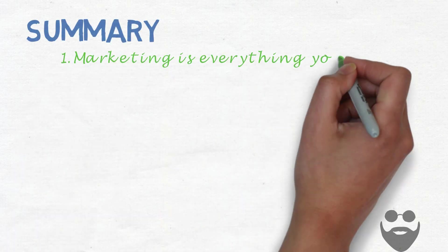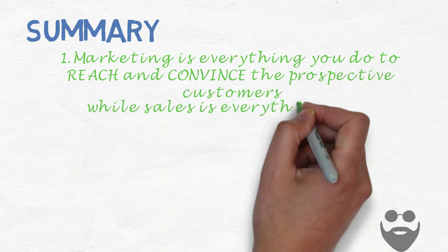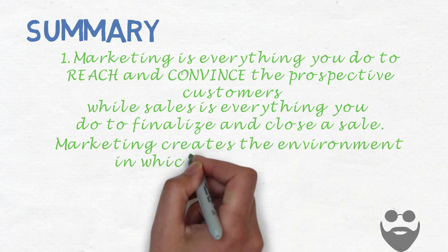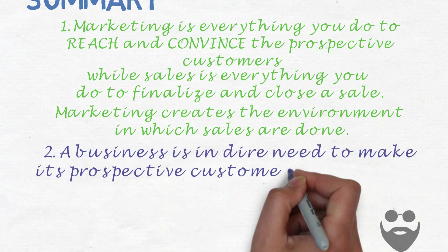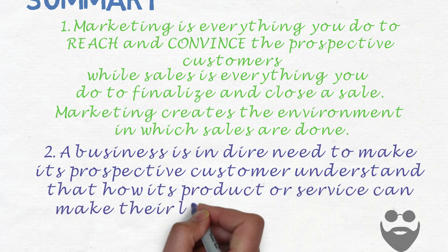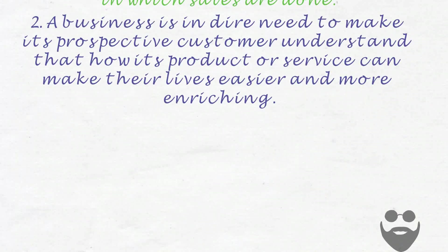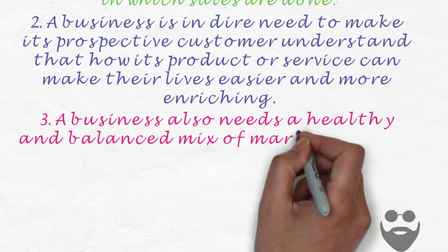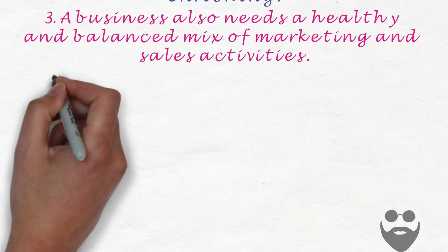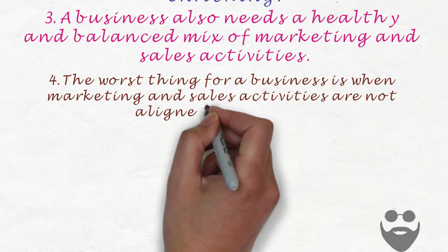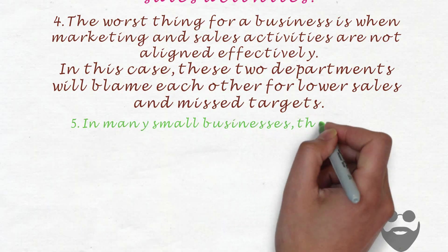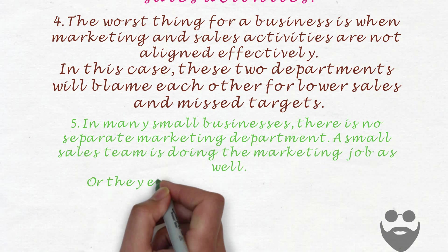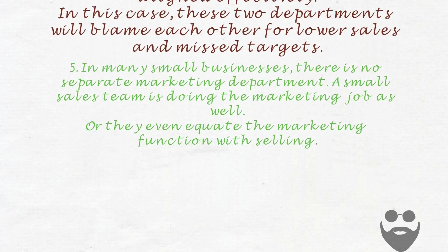Now let us summarize what we've learned in this video. One, marketing is everything you do to reach and convince prospective customers, while sales is everything you do to finalize and close a sale. Marketing creates the environment in which sales are done. Two, a business needs to make its prospective customer understand how its product or service can make their lives easier or more enriching. Three, a business needs a healthy and balanced mix of marketing and sales activities. Four, the worst thing for a business is when marketing and sales activities are not aligned effectively. The two departments will blame each other for lower sales and missed targets. Five, in many small businesses, there is no separate marketing department.